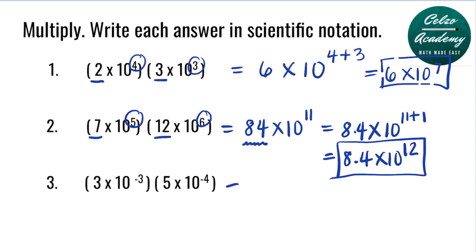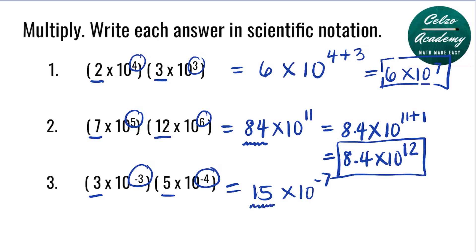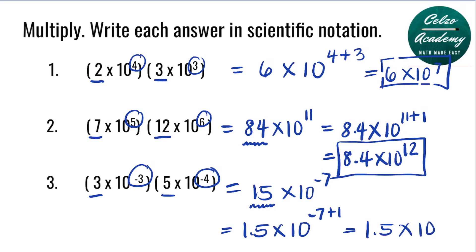Question number three: 3 times 10 to the power of negative 3, multiplied by 5 times 10 to the power of negative 4. Multiply 3 times 5, which is 15, then add the powers negative 3 and negative 4 to get 10 to the power of negative 7. We're not allowed an a value greater than 10, so we rewrite 15 as 1.5, and the power increases by 1 to negative 6. The answer is 1.5 times 10 to the power of negative 6.